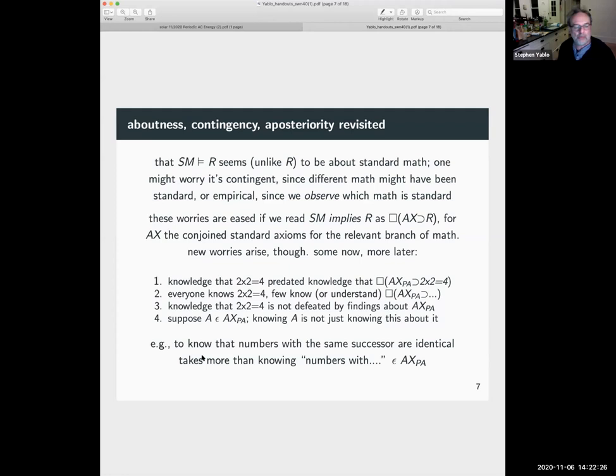Knowledge that two times two is four is not defeated by findings about the axiom. So if it turns out that the Italian logicians who think that piano arithmetic is inconsistent are correct, we don't say oh well too bad for two times two is four. Or I guess the right thing would be to say, so much the better for two times two equals five, because everything would follow from the axioms.